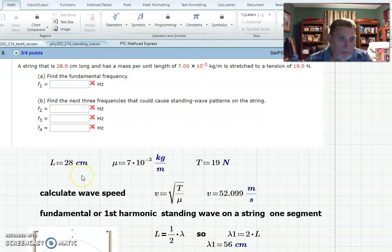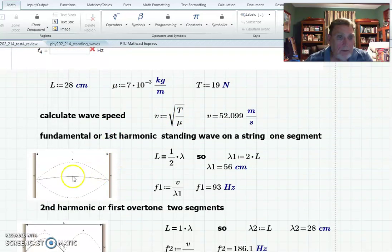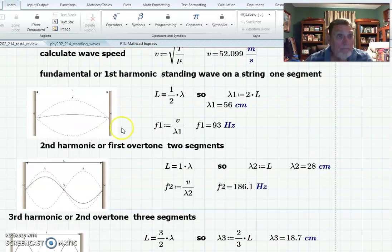We've got the length of the string, and he says find the fundamental. Well, the fundamental is when you have one segment, which means the length is half the wavelength. Remember, each segment is half the wavelength. So if you solve that for lambda, you get the wavelength, and then the frequency is velocity over wavelength. So I get 93 hertz. Then the second harmonic—that's the fundamental or first harmonic.